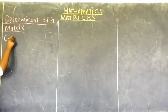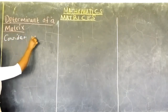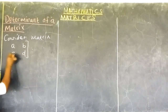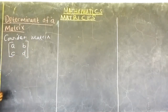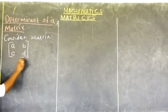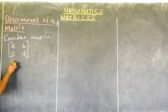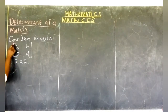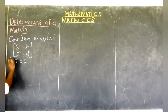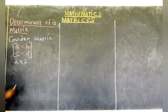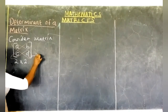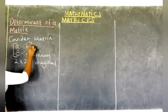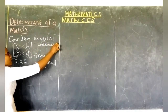I want us to consider a matrix A, B, C, and D. This matrix is a square matrix because it has two rows and two columns. In this case, we have the primary diagonal and we have the secondary diagonal. This one is the main diagonal or the primary diagonal, and this other one is the secondary diagonal.